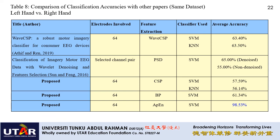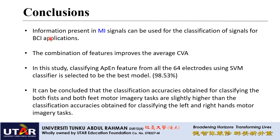In conclusion, the information present in motor imagery signals can be used for BCI signal classification. Combining features may improve cross-validation accuracy. The highest accuracy obtained is with approximate entropy using 64 electrodes and SVM, equal to 98.53 percent. Classification accuracies for both fist and feet motor imagery tasks are slightly higher than for left and right hand motor imagery tasks.